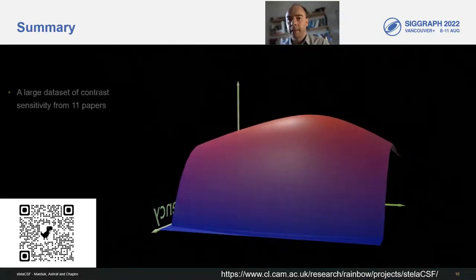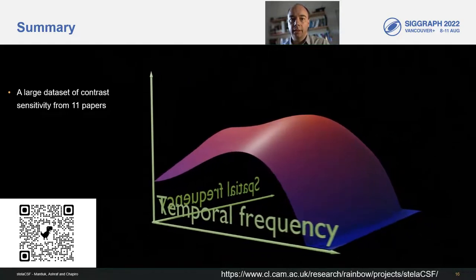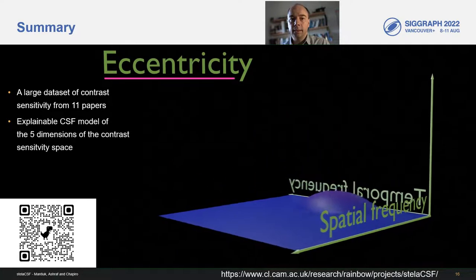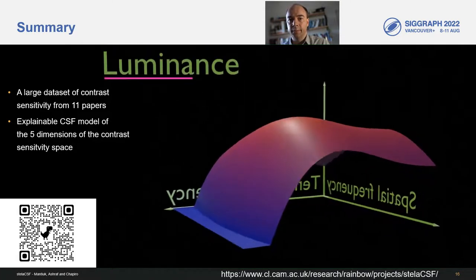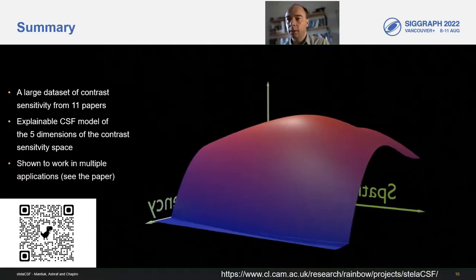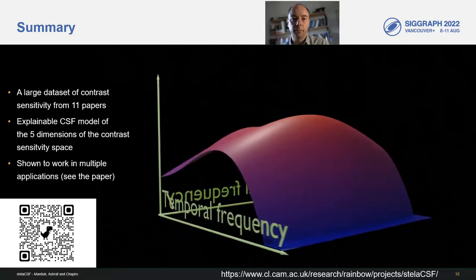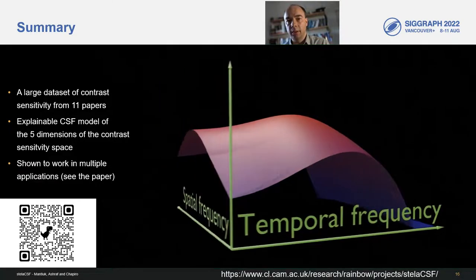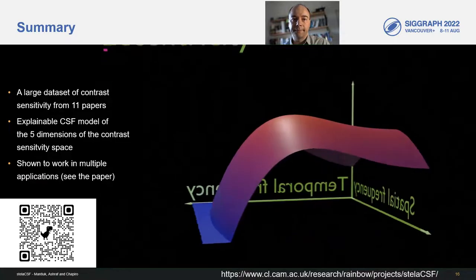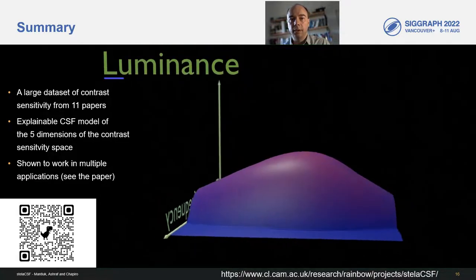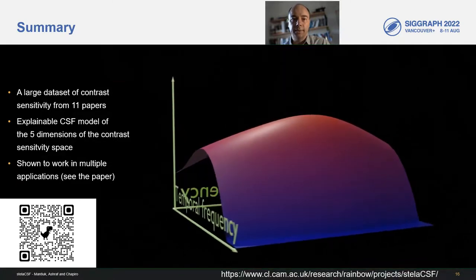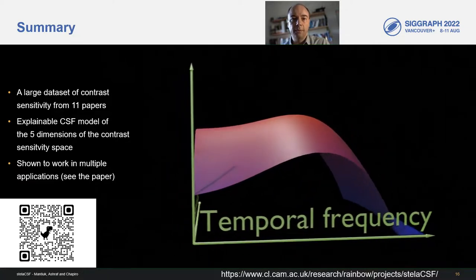To sum up, in this work we created a large dataset of contrast sensitivity by merging existing measurements from 11 papers. This let us build the first fully explainable CSF model of five dimensions that has been validated on such a large set of data. In the paper, we also show how the model can help in multiple applications, such as foveated rendering, flicker prediction, or visibility metrics. Those, however, did not fit into this short presentation. The dataset and the code for the model are publicly available under the URL shown below, which you can also access using the QR code on this slide. Thank you for listening to this presentation.